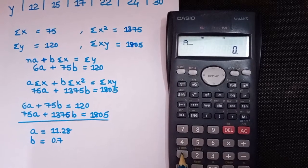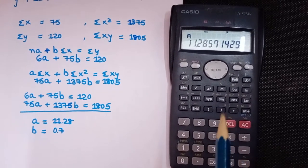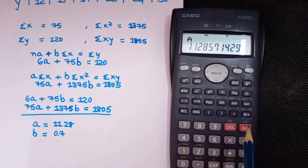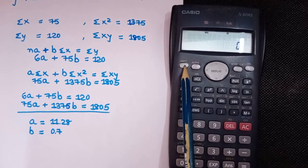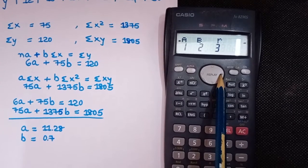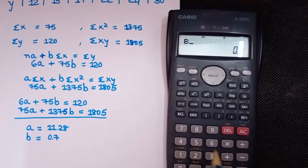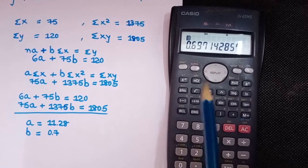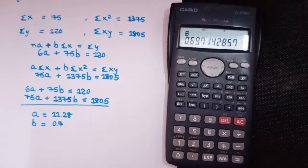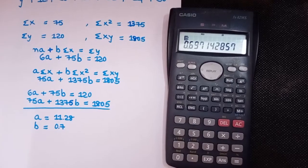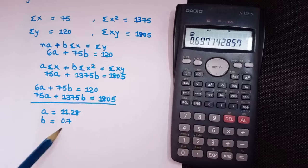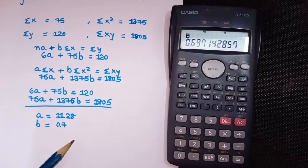First I need the value of A, so press 1 then equal — I got approximately 10.28. Press AC, then again Shift 2, press Next twice, then select B by pressing 2 and equal — I'm getting 0.697, which is approximately 0.7. This way you can find all values: ΣX, ΣY, ΣX², ΣXY, A, and B using the calculator FX-82MS.